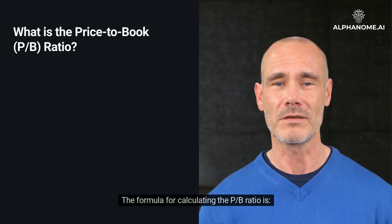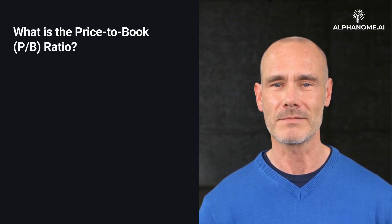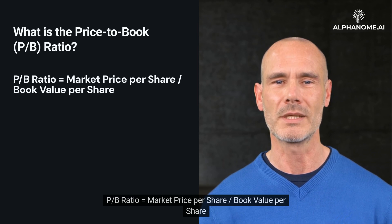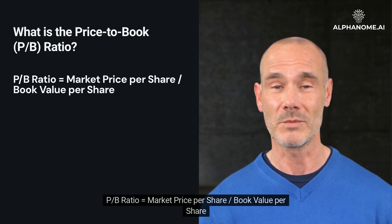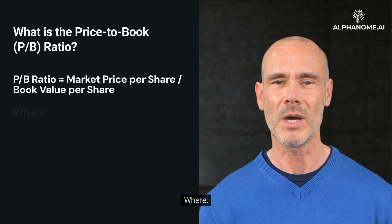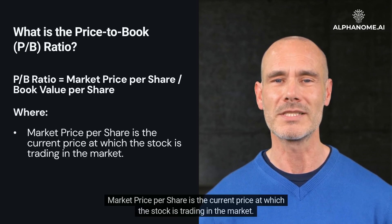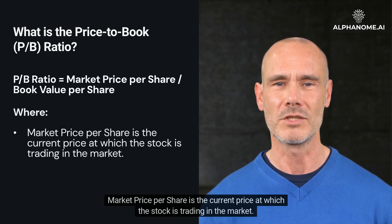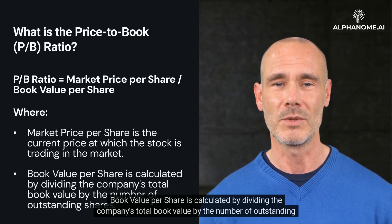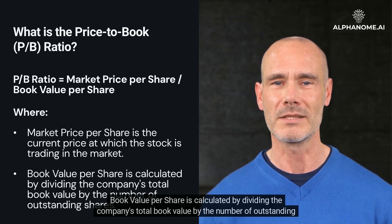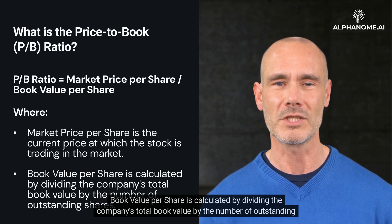The formula for calculating the P/B Ratio is: P/B Ratio = Market Price Per Share ÷ Book Value Per Share. Market price per share is the current price at which the stock is trading in the market. Book value per share is calculated by dividing the company's total book value by the number of outstanding shares.